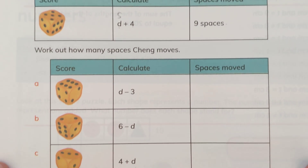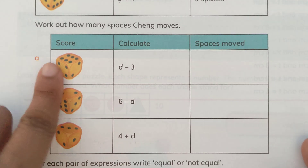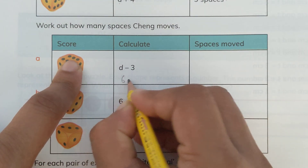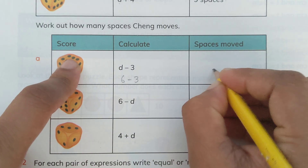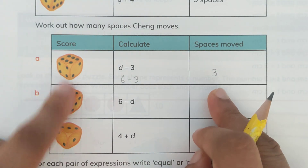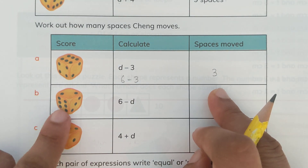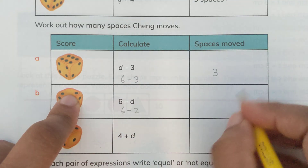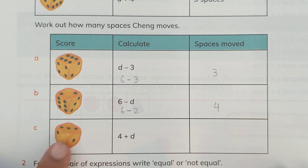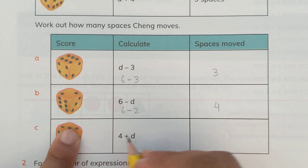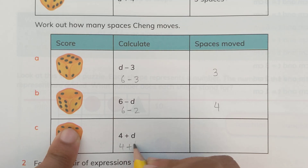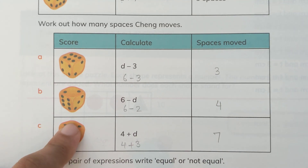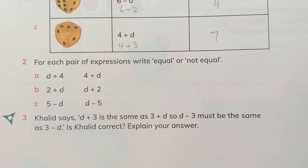Now we have to work out how many spaces Shang moves for other expressions. For d minus 3 where d is 6: 6 minus 3 equals 3 spaces. Then for d minus 2 where d is 6: 6 minus 2 equals 4 spaces. And for d plus 3 where d is 4: 4 plus 3 equals 7 spaces. How easy and interesting it is!